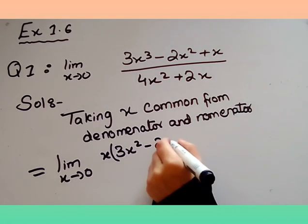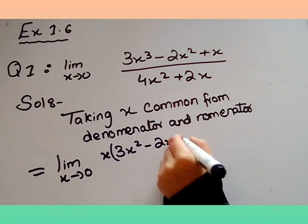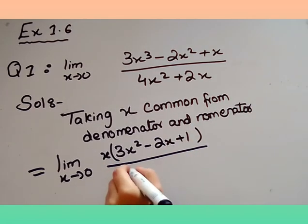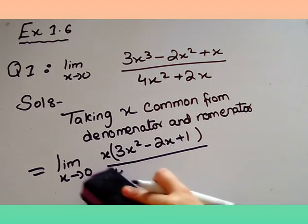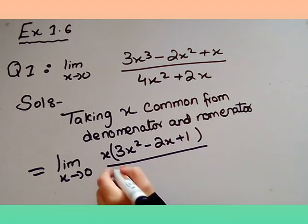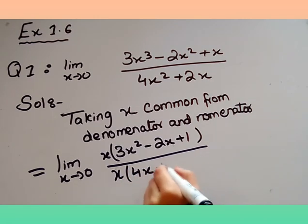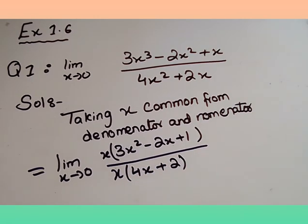So let's continue. Here I wrote equals to limit x→0, x I took common from there and then inside I will get (3x² - 2x + 1) divided by x I took common from denominator too and then I will have (4x + 2).